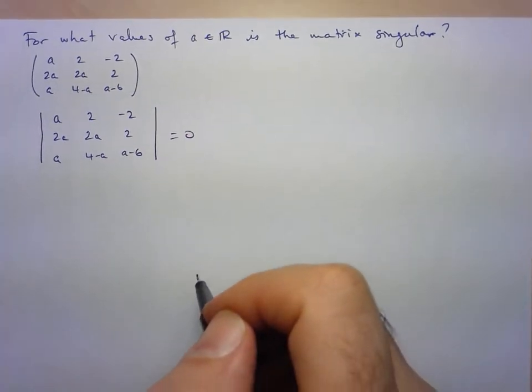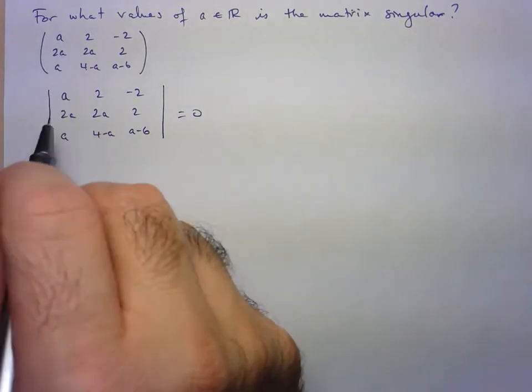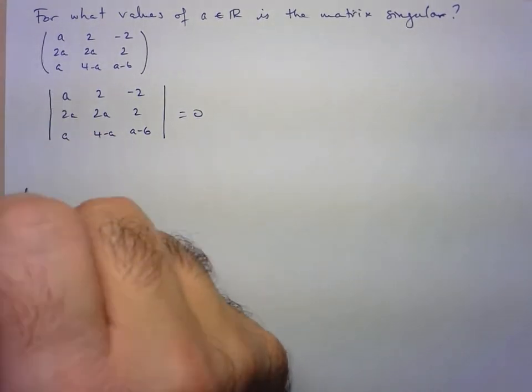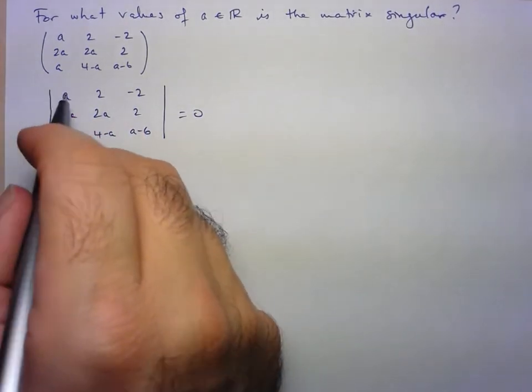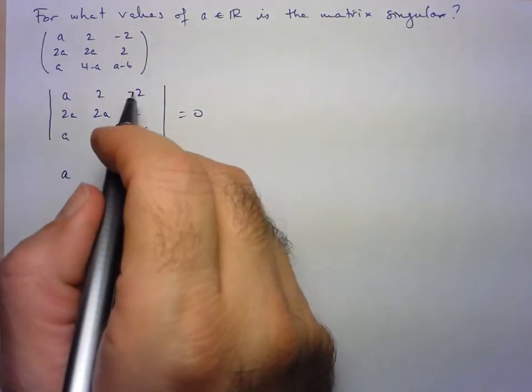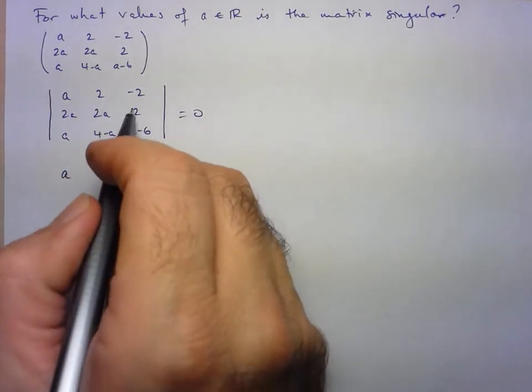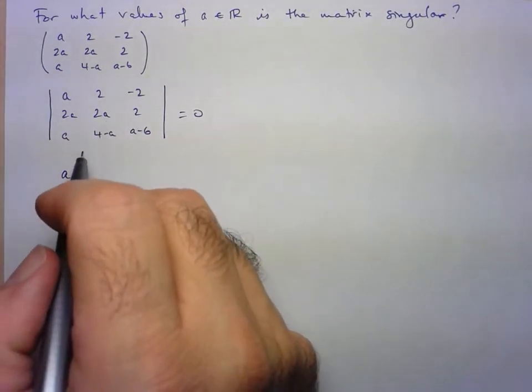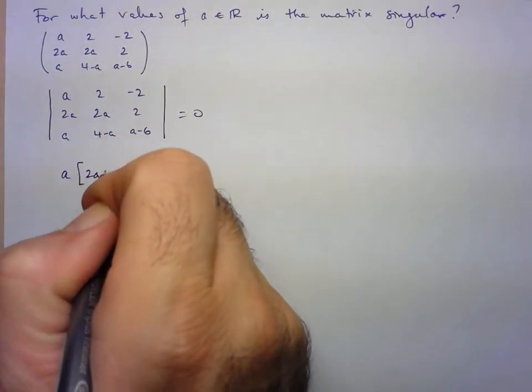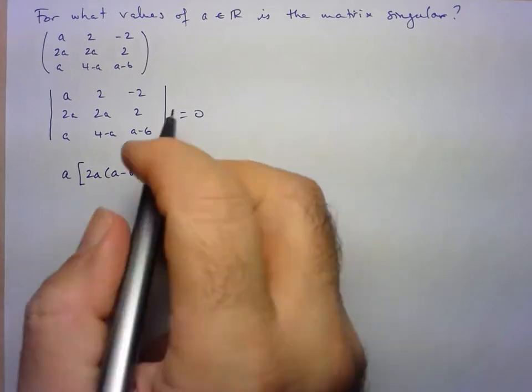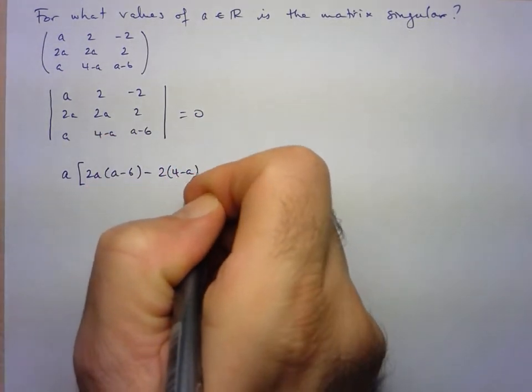Let's start. Our first term is going to be the top left corner. So A times, and we sort of hide this row and this column, and we multiply it by the determinant of that remaining 2 by 2. So let's do that here. We have 2A times A minus 6, and then minus 2 times 4 minus A.